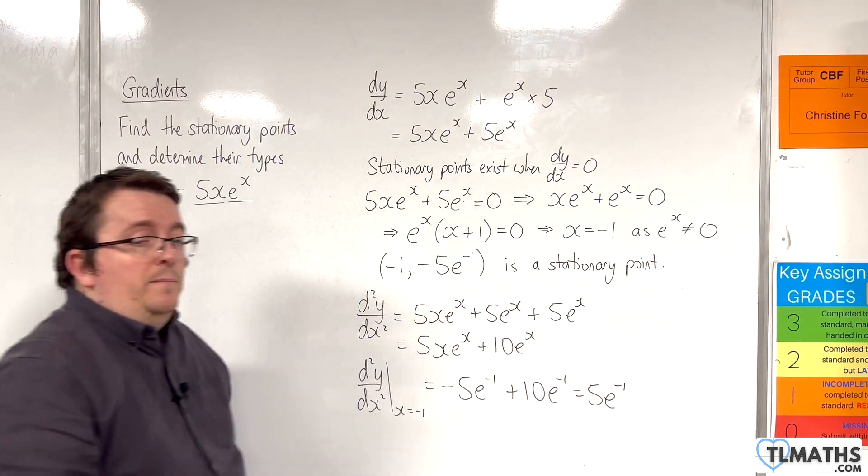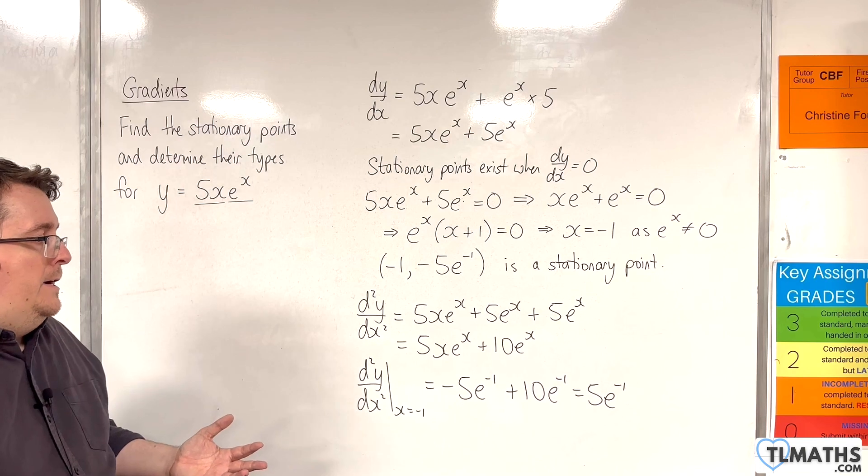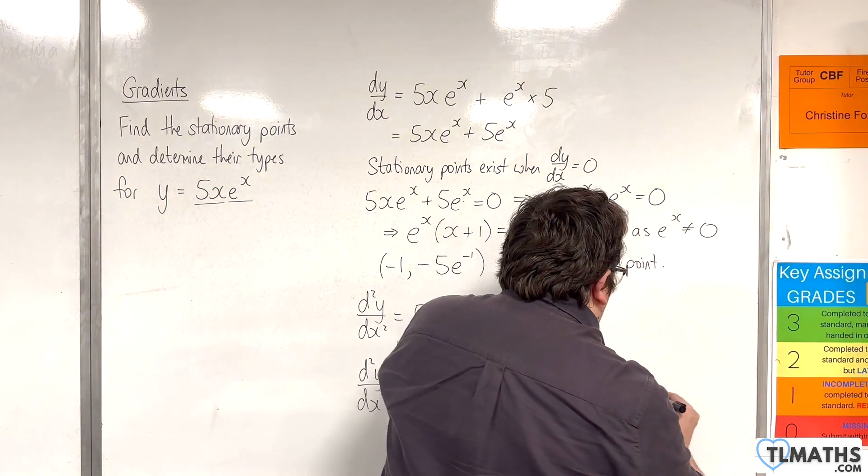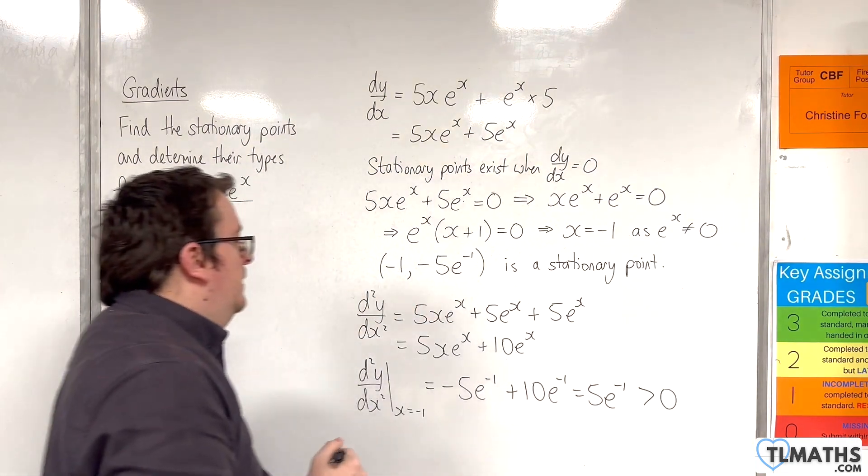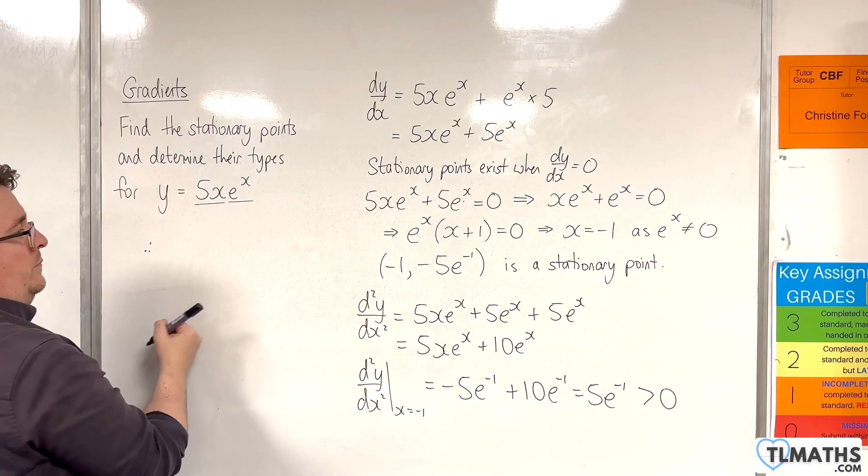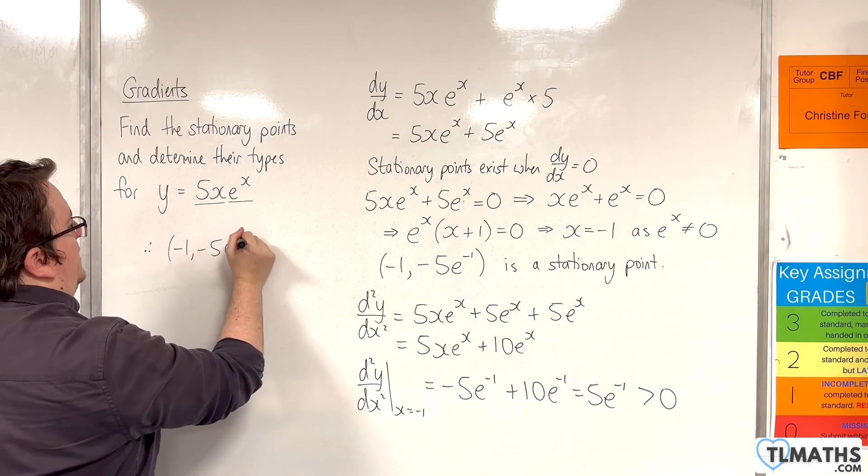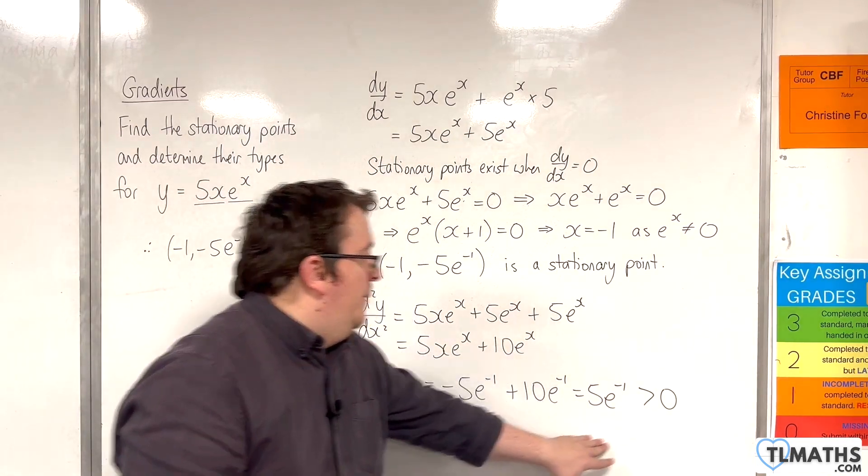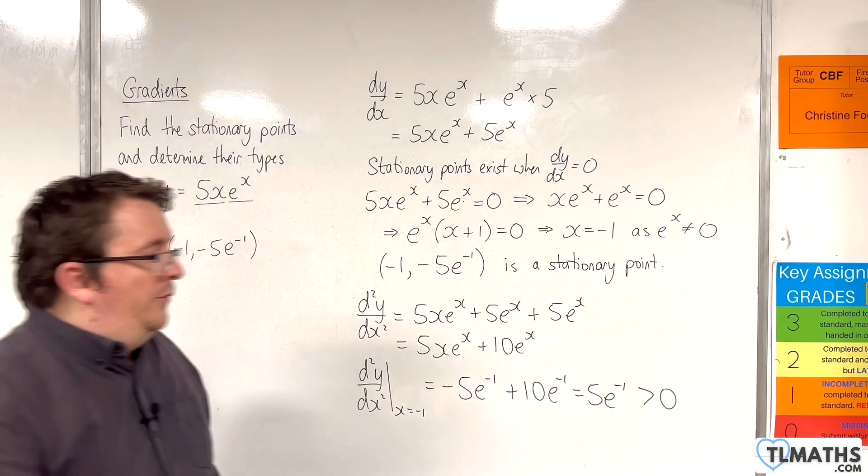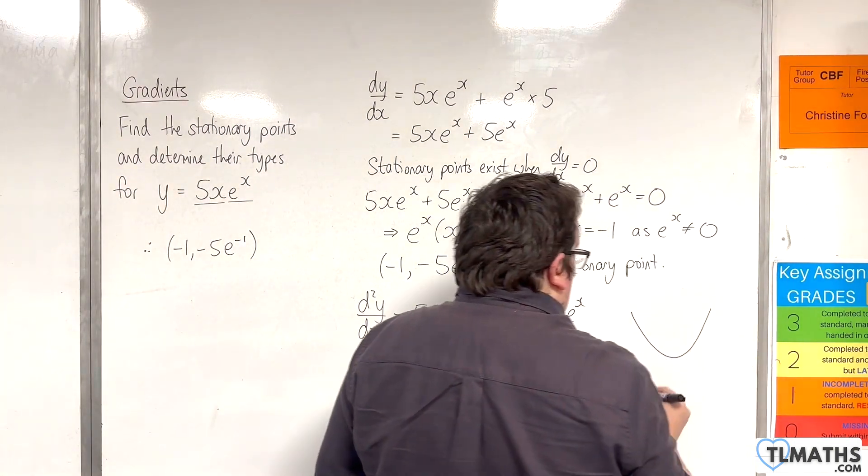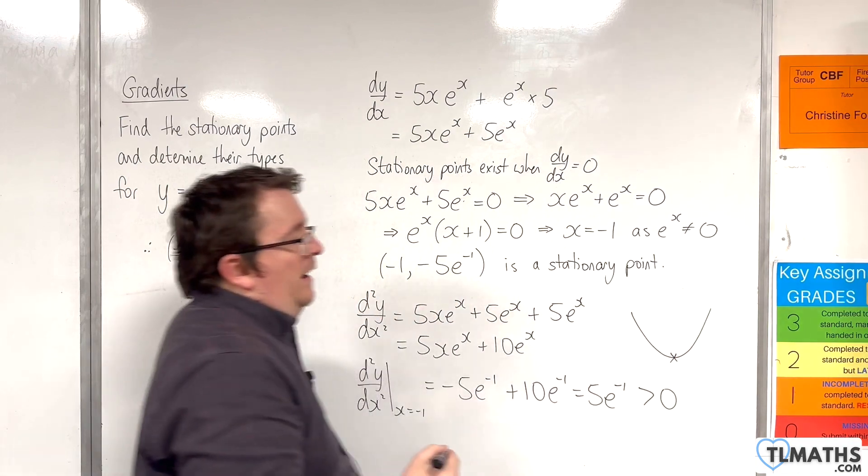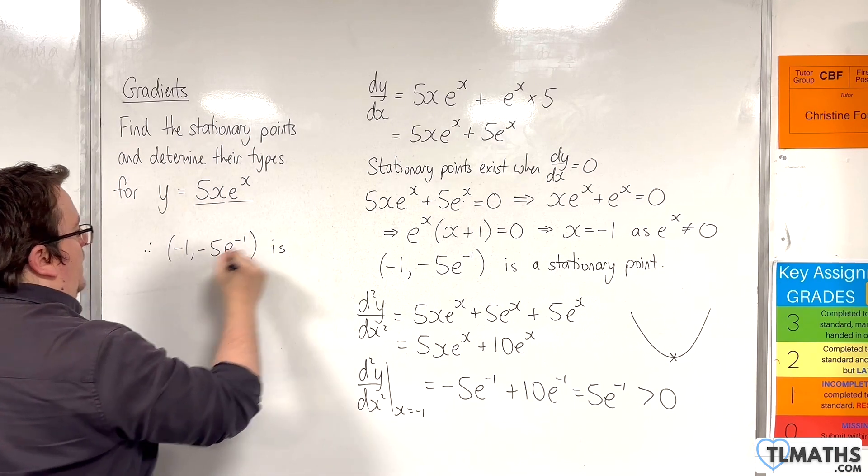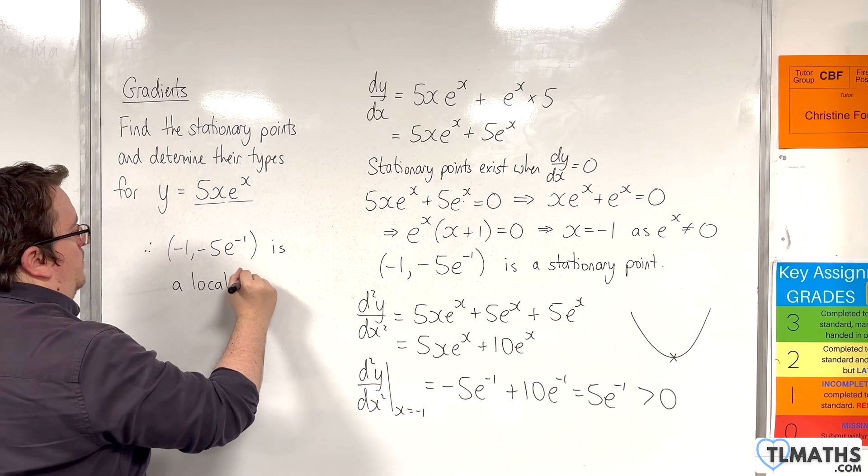E to the minus 1, because e to the x can never be negative, it's always greater than 0. E to the minus 1 is a positive value, so 5 e to the minus 1 is positive. Therefore, minus 1, minus 5 e to the minus 1 has to be a local minimum because this is showing us that the curve is convex at that point. Therefore, minus 1, minus 5 e to the minus 1 is a local minimum.